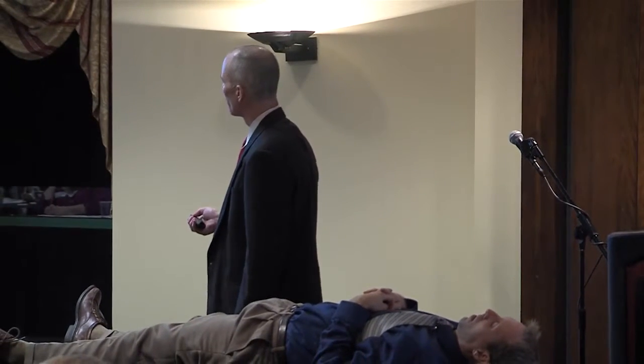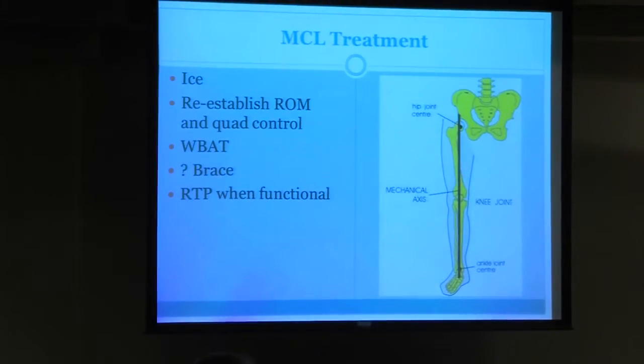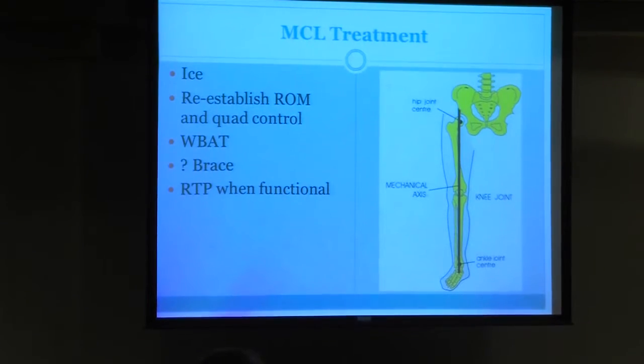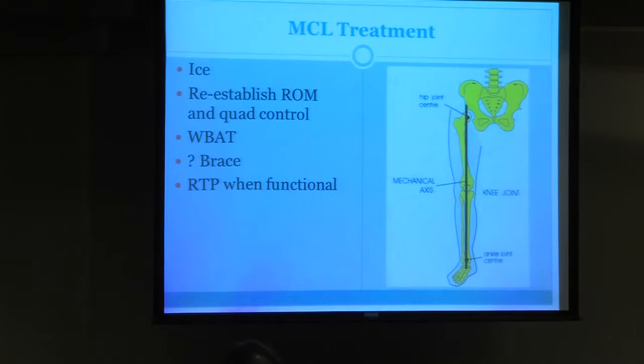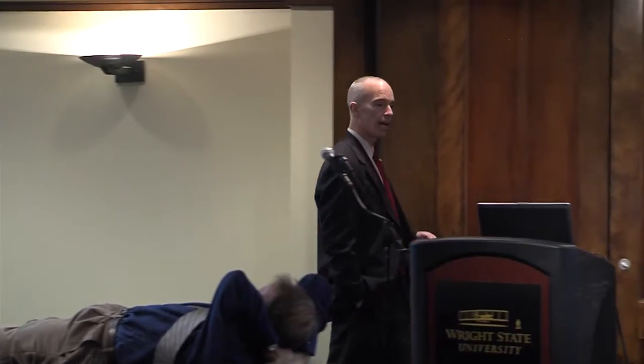The question is whether to brace MCL injuries, and I usually do not brace. The reason is that the mechanical axis — a line from the center of the hip to the center of the ankle — shows that the medial side of the knee takes about 60% of the weight and the lateral side about 40%. So when standing, the medial side is in compression, meaning weight-bearing walking actually compresses the MCL. Occasionally, in a high-grade three that's very symptomatic, I will brace, and sometimes a brace can get people back playing quicker — for example, a wide receiver or interior lineman. Other sports like soccer, where they're kicking, it's a lot harder.